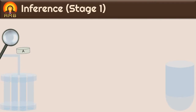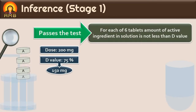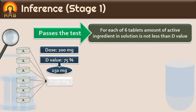Suppose we are testing a batch of tablets containing drug A and the labeled or stated dose of the drug is 200 mg. In the monograph of this drug, the D value given is 75% of stated amount. It means that in the dissolution test, the amount of drug in solution after the specified time should be more than 75% of stated amount, i.e. more than 150 mg. In the first stage of dissolution test, the sample passes the test if for each of the 6 tablets, the amount of active ingredient in solution is not less than D value, here it is 150 mg. Thus, in case of all 6 tablets, drug coming into solution after specified time should be more than 150 mg.